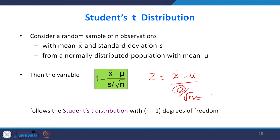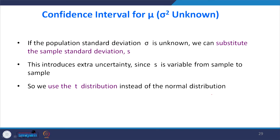So when will you go for T distribution? When sigma is unknown and when n is less than 30. Then the variable T equal to x-bar minus mu divided by s by root n follows the Student T distribution with n minus 1 degrees of freedom. If the population standard deviation sigma is unknown, we substitute the sample standard deviation s, which introduces extra uncertainty since s varies from sample to sample. So we use the T distribution instead of the normal distribution.